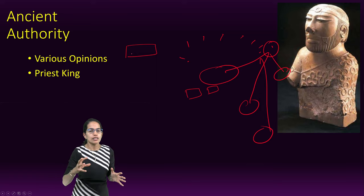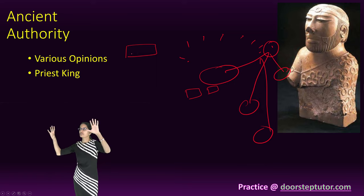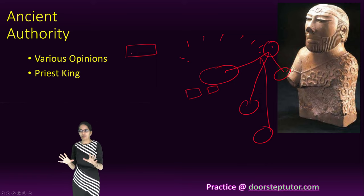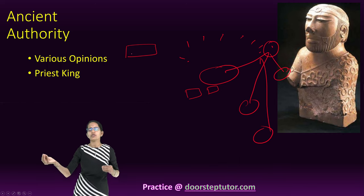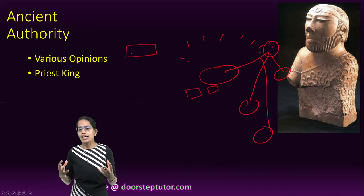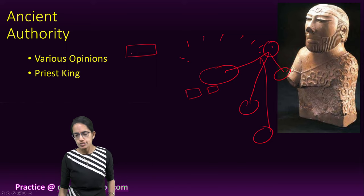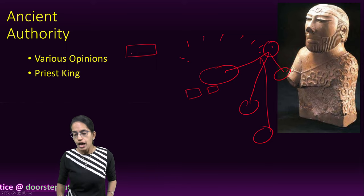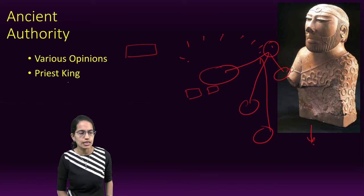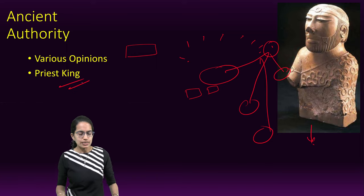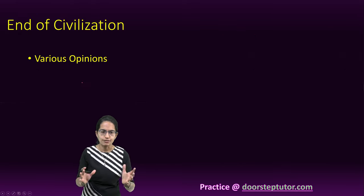Nothing has been labeled definitively as a palace, though archaeologists have associated certain structures with authority. A notable statue was found which archaeologists designated as the Priest-King, considered the highest authority within the civilization.